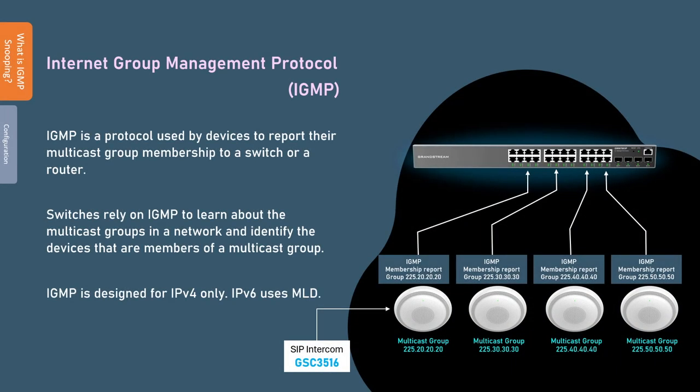IGMP stands for Internet Group Management Protocol. It is used by devices to report their multicast group membership. When a device needs to receive multicast traffic for a specific multicast group, it sends a membership report to the connected switch. The membership report includes the multicast groups which the device wants to join. Without IGMP, all multicast traffic will be considered unknown multicast traffic and the switch will need to send that traffic to all connected devices, resulting in unnecessary network traffic.